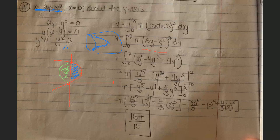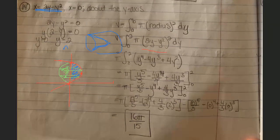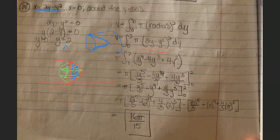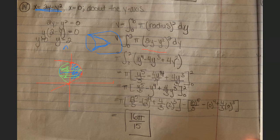The teacher shows the 3D picture: the horizontal intersection produces circles. This is not a cylinder or cone—it's more like a ball-like shape. The purpose is to explain why the radius equals 2y minus y squared. The student explains: since the curve goes to the function x = 2y - y², from the axis to the curve is the radius.